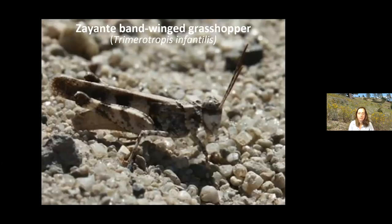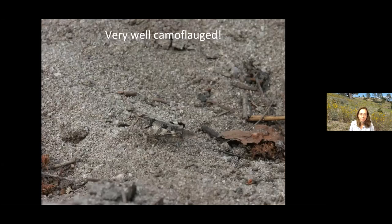The Zayante band-winged grasshopper is another endemic species to the Sandhills — extraordinarily rare, found in only five populations covering less than 250 acres. It's only found in that sand parkland habitat, which is the rarest of the natural Sandhills communities. These grasshoppers are very small, about an inch and a quarter long, and very well camouflaged — they match the gray color of the sand pretty well and are almost hard to spot.